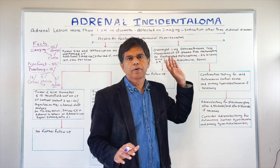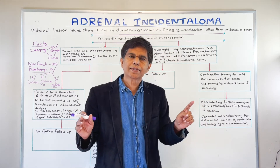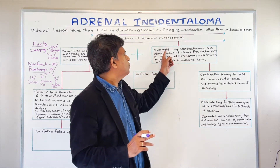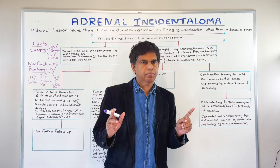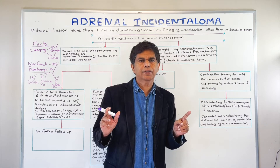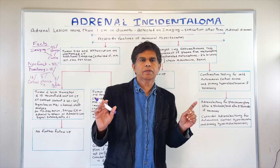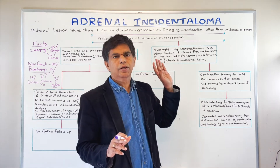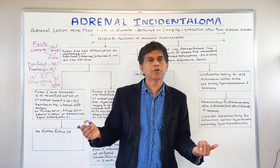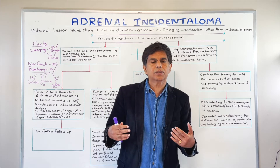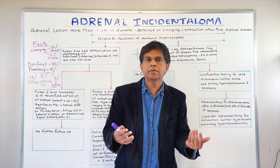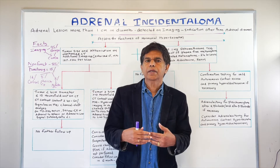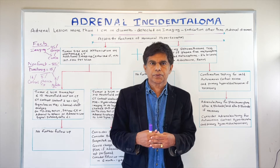Once you get the CT, we said 12% are cortisol-producing — so the best test is an overnight 1 milligram dexamethasone suppression test. If the cortisol level comes back less than 1.8, that's pretty much benign. Next, to rule out pheochromocytoma — about 8% — you can do plasma-free metanephrines or 24-hour free urine metanephrines. Both are options.